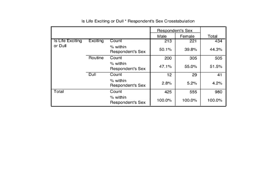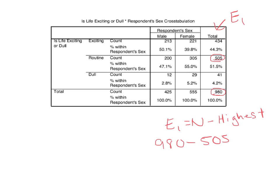Here we have a frequency crosstab for respondent sex and whether life is exciting or dull. To calculate E1, we take N, which is 980 — always the number in the bottom right corner — and subtract the highest frequency in the total column. Looking down that column, the highest frequency is 505. So E1 equals 980 minus 505, which gives us 475.